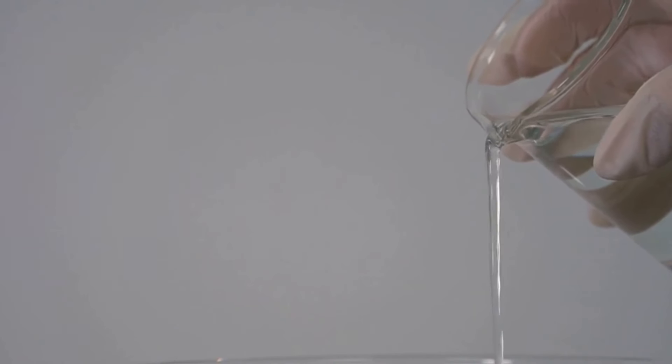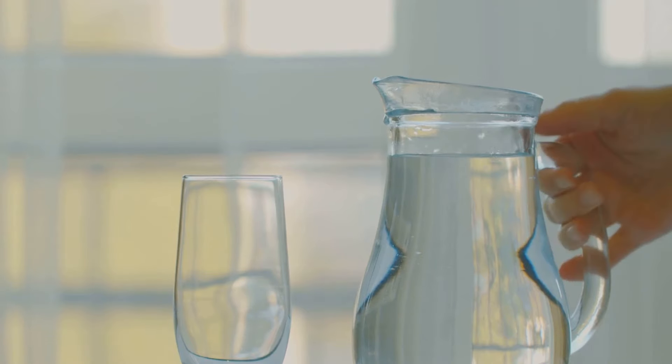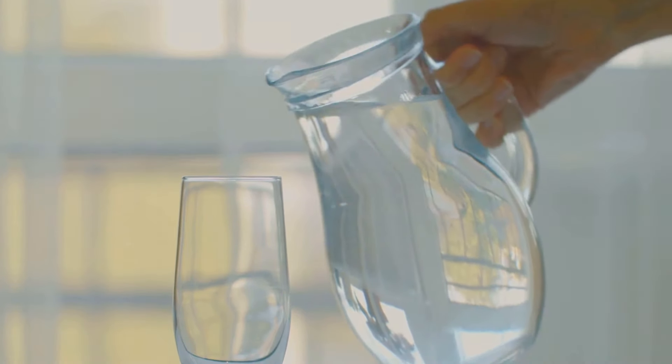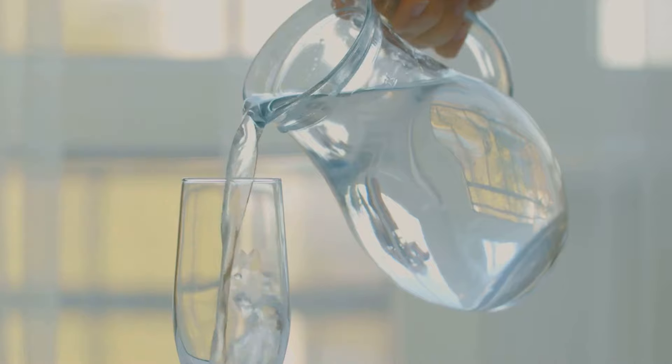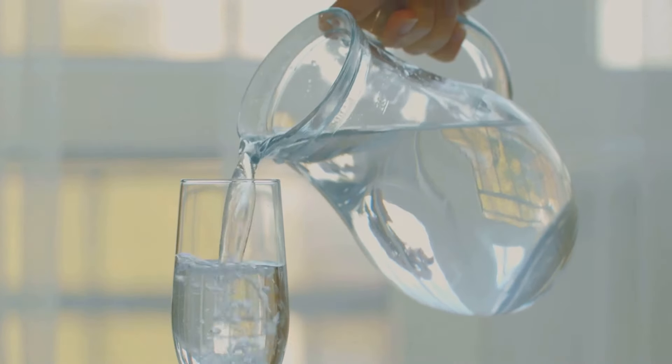Step four: strain it. After simmering, turn off the heat and let the clove water cool down a bit. Once it's cool enough to handle, strain the clove water into a bowl or jug. You can use a fine mesh strainer or a cheesecloth to do this. And voila, your clove water is ready.